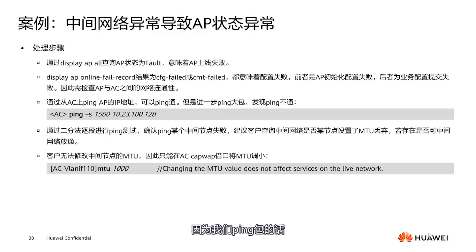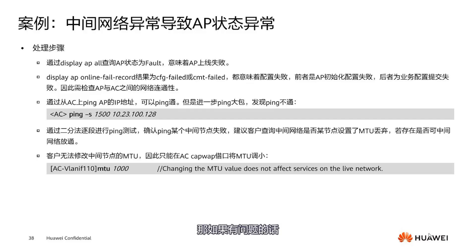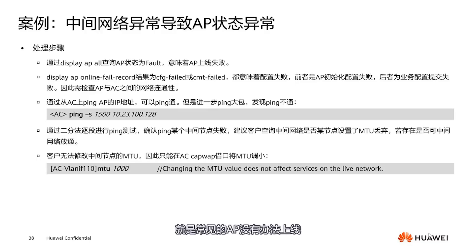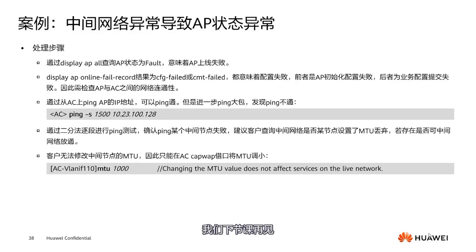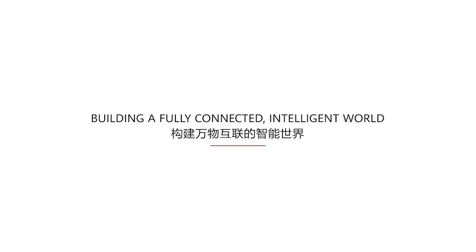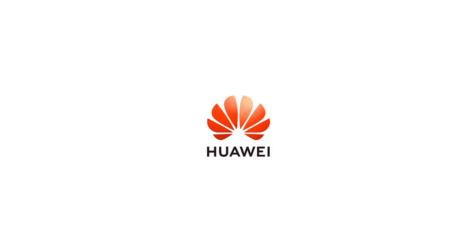The last issue is the performance of the terminal, which can cause poor AP signal reception. Generally, a laptop performs better than a mobile phone — normally we use a phone for testing, and if the signal is poor, test with a computer. This gives a general idea of whether the phone's reception capability is weaker. This is a common issue with air interface signals. In the next lesson, we will start discussing troubleshooting issues related to slow internet on terminals.